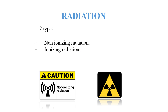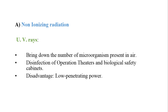The next physical method is radiation. Radiations are of two types: non-ionizing and ionizing. An example of non-ionizing radiation is UV radiation. UV radiation cannot be used for sterilization — it cannot remove microbes completely — but it does bring down the number of microorganisms present in the air or on surfaces.